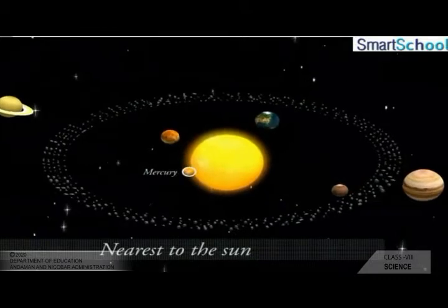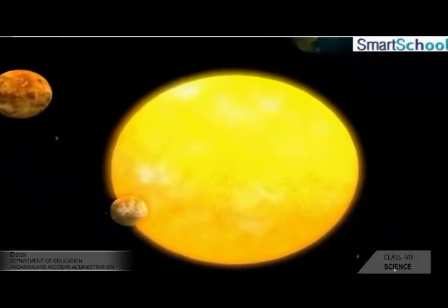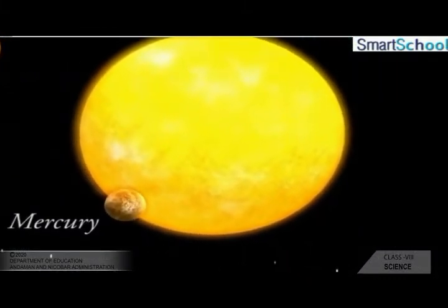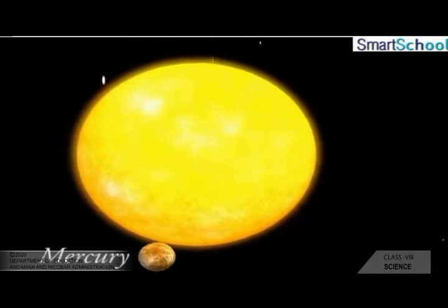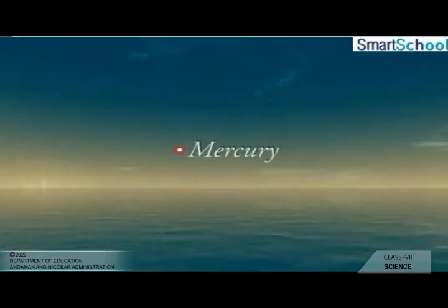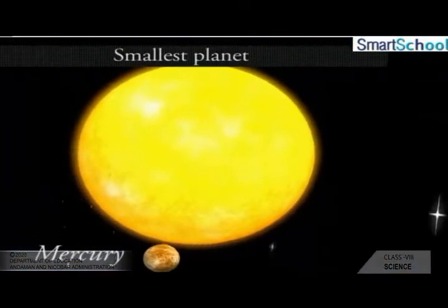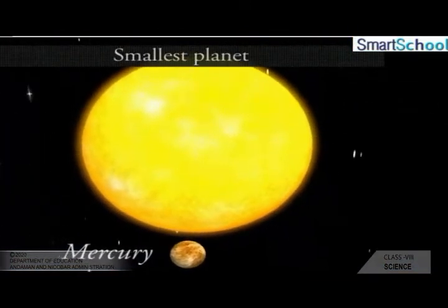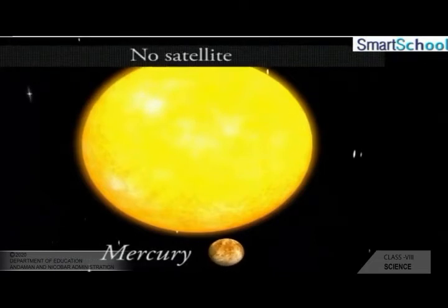The planet Mercury is the nearest to the sun. It is mostly difficult to see because it remains hidden in the sun's glare. It can sometimes be seen on the horizon just before sunrise or just after sunset. It is the smallest planet of our solar system and has no satellite of its own.